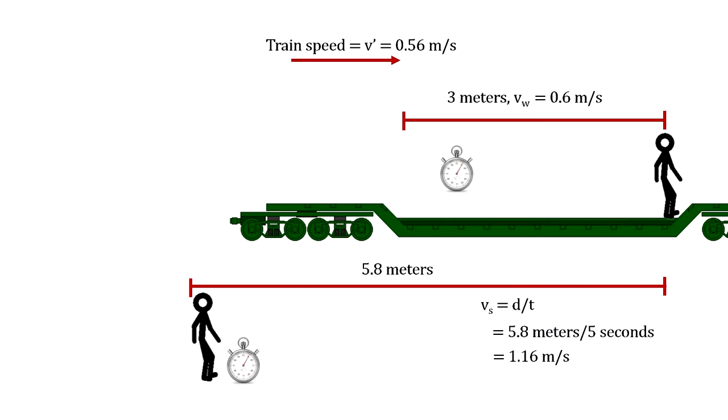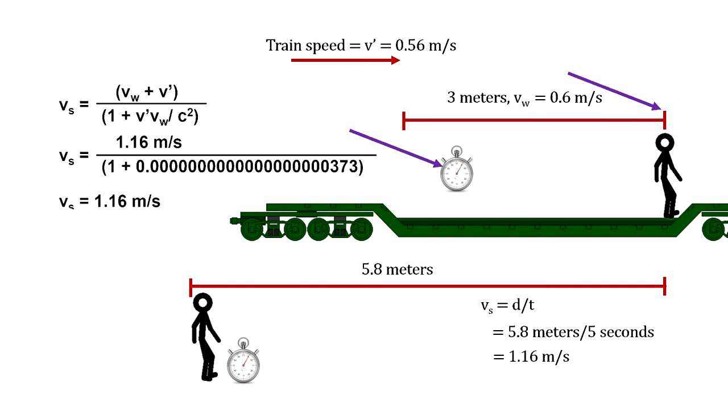In special relativity, the clock on the train is running a bit slower and the distance the person walked is a little bit shorter, as seen by the observer on the ground. So this calculation of the total velocity is a bit less than the Galilean calculation. But at these speeds, it is too small a difference to notice.